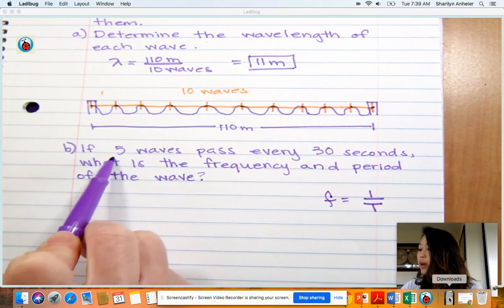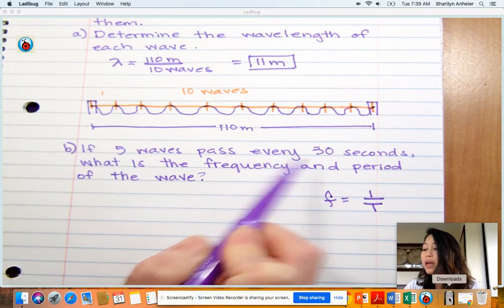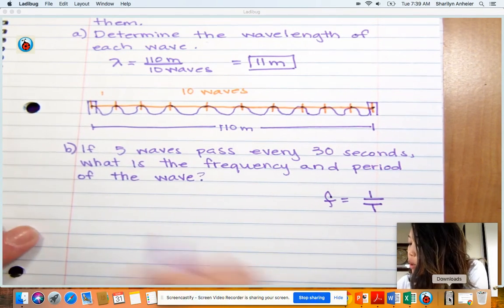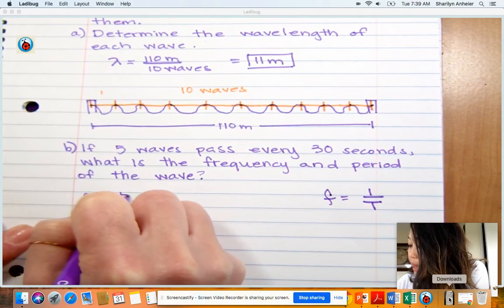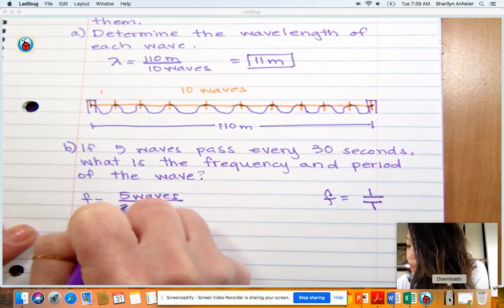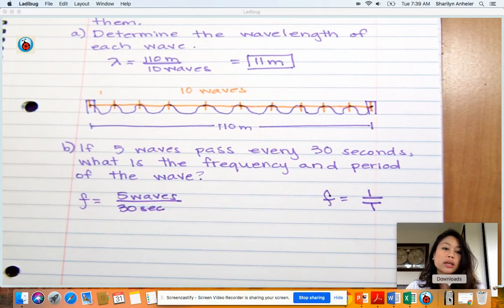Here it tells us that five waves pass every 30 seconds. We want the amount of waves every one second. If we think about this, we're going to take the five waves over 30 seconds and divide the two, and that gives us the number of waves every one second.